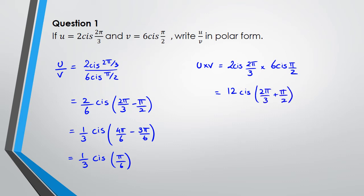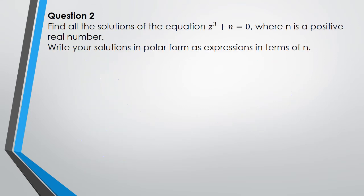So 2 times 6 is 12, and you're gonna get cis 2π/3 plus π/2, which means you would get 12 cis 7π/6. So that's for multiplication you add the modulus, for division you subtract the modulus.